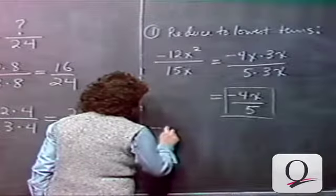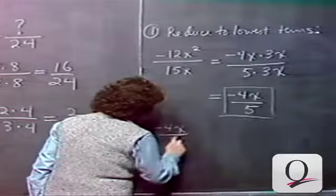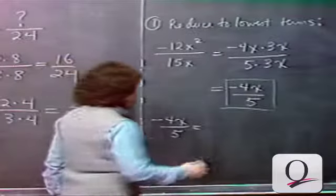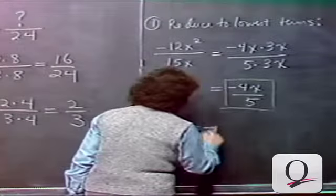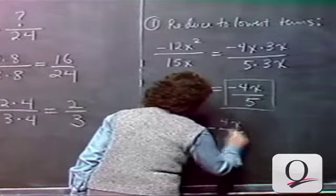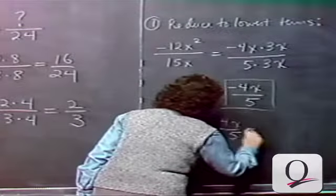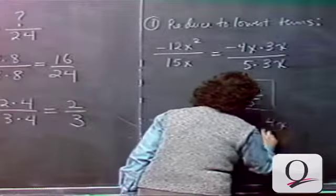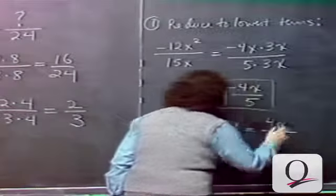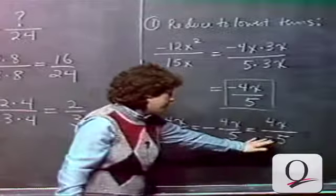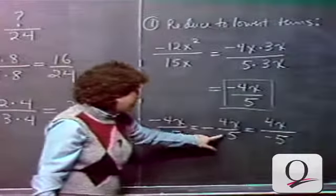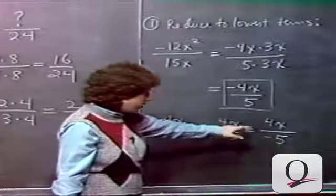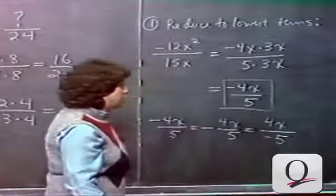The answer minus 4x over 5 can be written with the negative sign in the numerator, or the minus sign can precede the fraction as minus(4x over 5), or the minus sign can be in the denominator as 4x over minus 5. These are all equivalent; however, the first and second are the most common ways of writing this. We very rarely put the minus sign in the denominator.